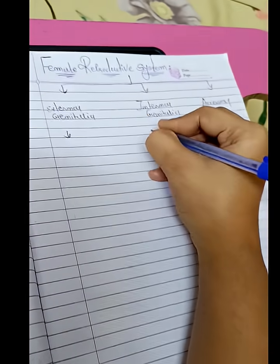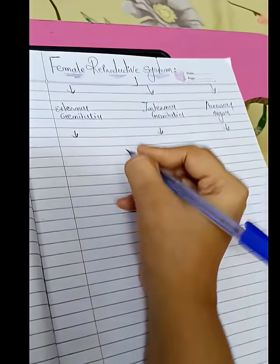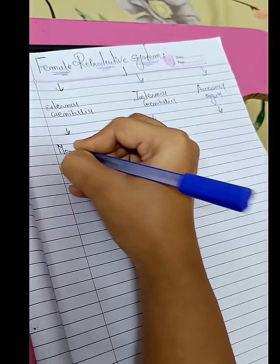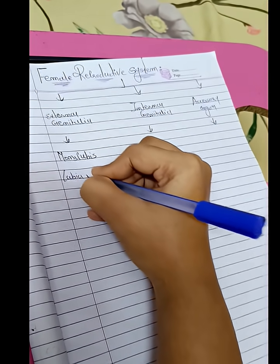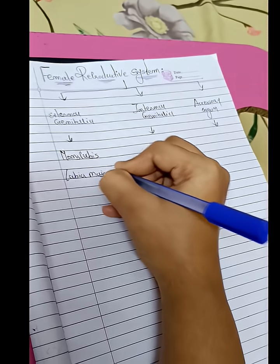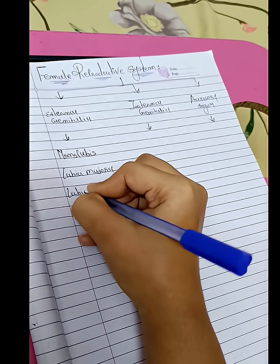Into the external genitalia: first is mons pubis, second is labia majora that is the outer part, third is labia minora.